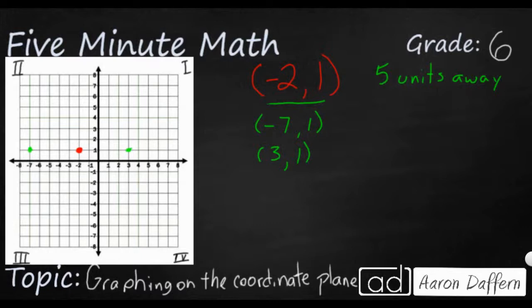If I wanted to go five up, well, I'm going to keep my -2, but now I'm going to change my y-coordinate. And I'm going to change it from 1 all the way up to 6. And so (-2, 6).